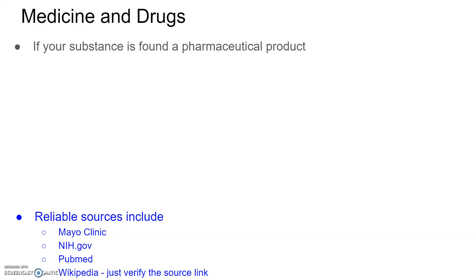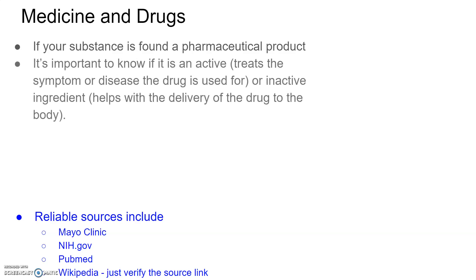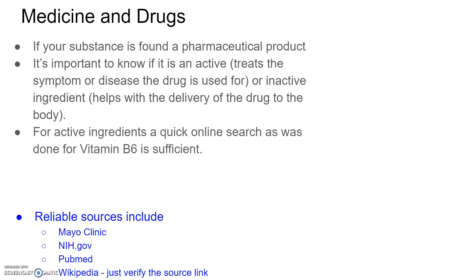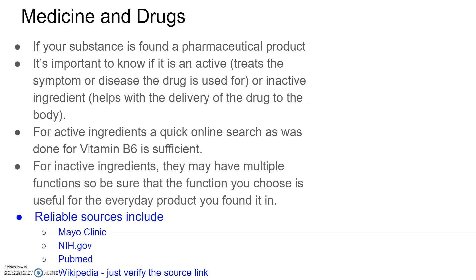What if your substance, instead of being something like vitamins or minerals or macronutrients, has to do with a pharmaceutical product? In the case of a pharmaceutical product like medicine or drugs, it's important to know if the chemical you're focusing on is an active ingredient — which actively treats the symptoms — or an inactive ingredient, which usually just helps with the delivery of the drug to the body or the appearance of the drug. For an active ingredient, a quick online search, just as was done for vitamin B6, will be sufficient. For inactive ingredients, they may have multiple functions, so you want to choose the function that's useful for the product you found it in.